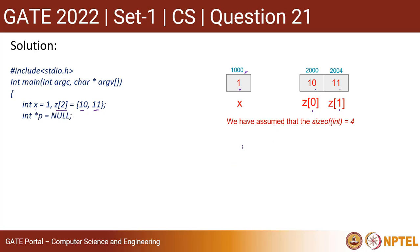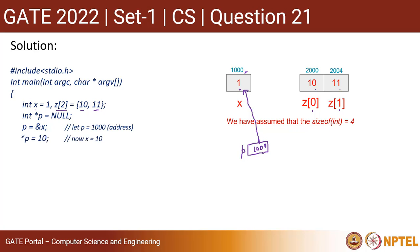Next, we have an integer pointer p which is initialized to null. Then it gets the address of x, so the address of x is 1000. That means p is now pointing to x. If we do *p = 10, that means it is changing the value of x and making the value of x 10.